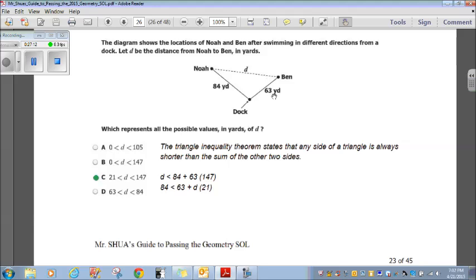And it also has to be larger than these two sides together. So, 63 plus this distance has to be greater than 84. And the distance between these two is 21. So, it has to be greater than 21. So, the distance, D, has to be greater than 21 and less than 147. Choice C. That's our answer. All right. Let's move on.